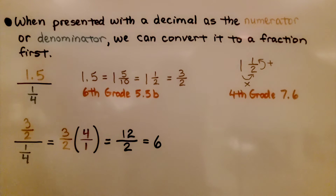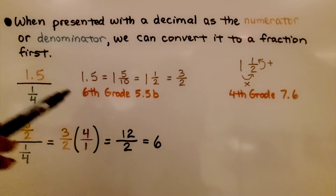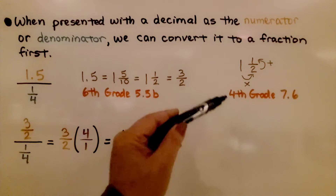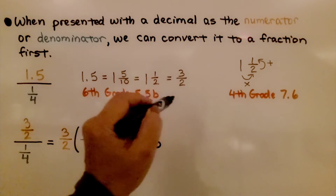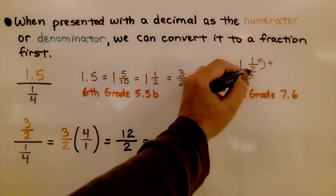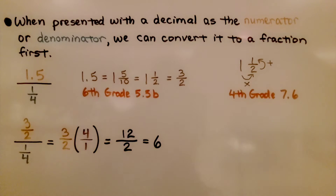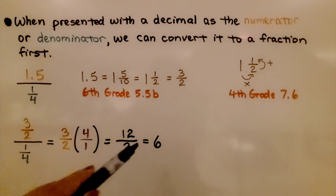When presented with a decimal as a numerator or denominator, we can convert it to a fraction first. We want them to either both be decimals or both be fractions. So 1.5 equals 1 and 5/10, which equals 1 and 1/2. To turn this into an improper fraction, we multiply the whole number by the denominator: 1 times 2 is 2, add the numerator 1, giving us 3/2. Now we have 3/2 divided by 1/4. We multiply by the reciprocal, 4 over 1, and get 12/2, which simplifies to 6.